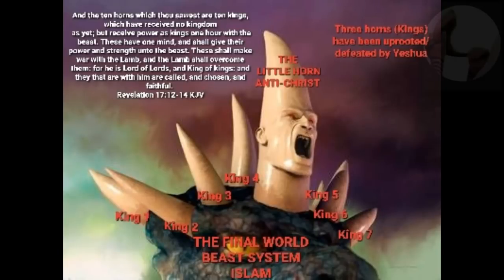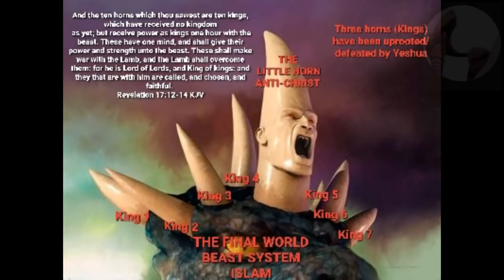It is out of this beast that the ten horns of the end times will emerge, and Yeshua will pluck out three of those horns. And then the little horn, the son of perdition, the Antichrist, will emerge. 'And the ten horns which thou sawest are ten kings which have received no kingdom as yet, but received power as kings one hour with the beast. These have one mind and shall give their power and strength unto the beast. These shall make war with the Lamb, and the Lamb shall overcome them, for he is Lord of lords and King of kings. And they that are with him are called and chosen and faithful.' Revelation 17 verses 12 to 14. So, the resurrected Islamic beast system out of which will rise the little horn, the Antichrist.